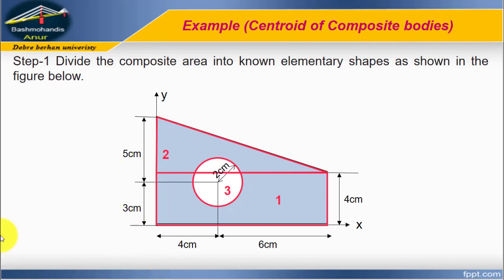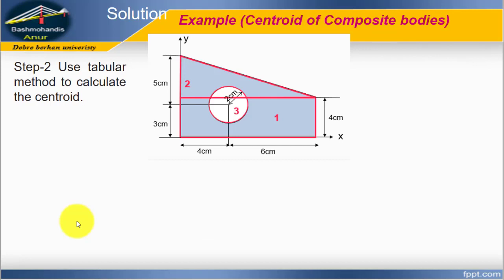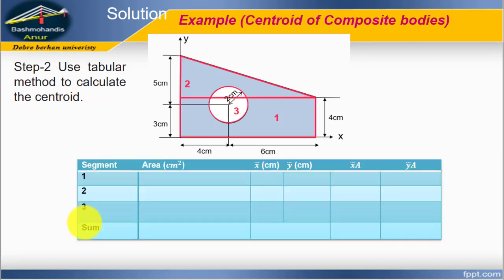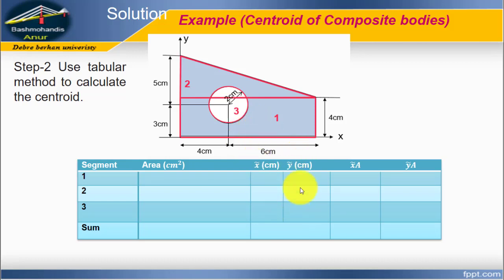The second step is to use the tabular method to calculate the centroid — it's the best and most effective approach. The table has the following columns: Column 1 is the segment number, Column 2 is the area, Column 3 is the x̃ coordinate for each shape, Column 4 is the ỹ coordinate for each shape, and the final columns are x̃ times area and ỹ times area.